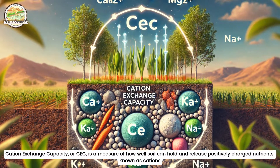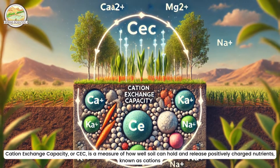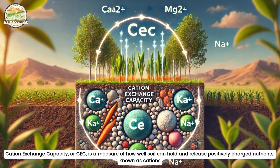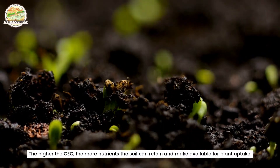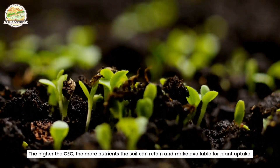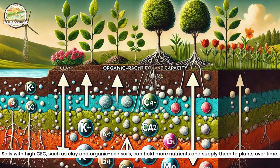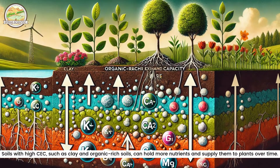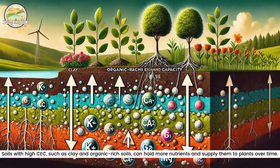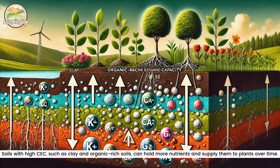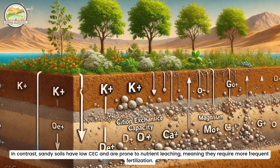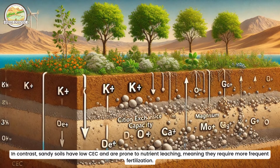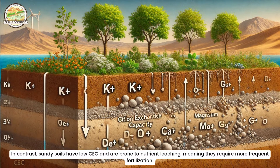Cation Exchange Capacity, or CEC, is a measure of how well soil can hold and release positively charged nutrients, known as cations. The higher the CEC, the more nutrients the soil can retain and make available for plant uptake. Soils with high CEC, such as clay and organic-rich soils, can hold more nutrients and supply them to plants over time. In contrast, sandy soils have low CEC and are prone to nutrient leaching, meaning they require more frequent fertilization.